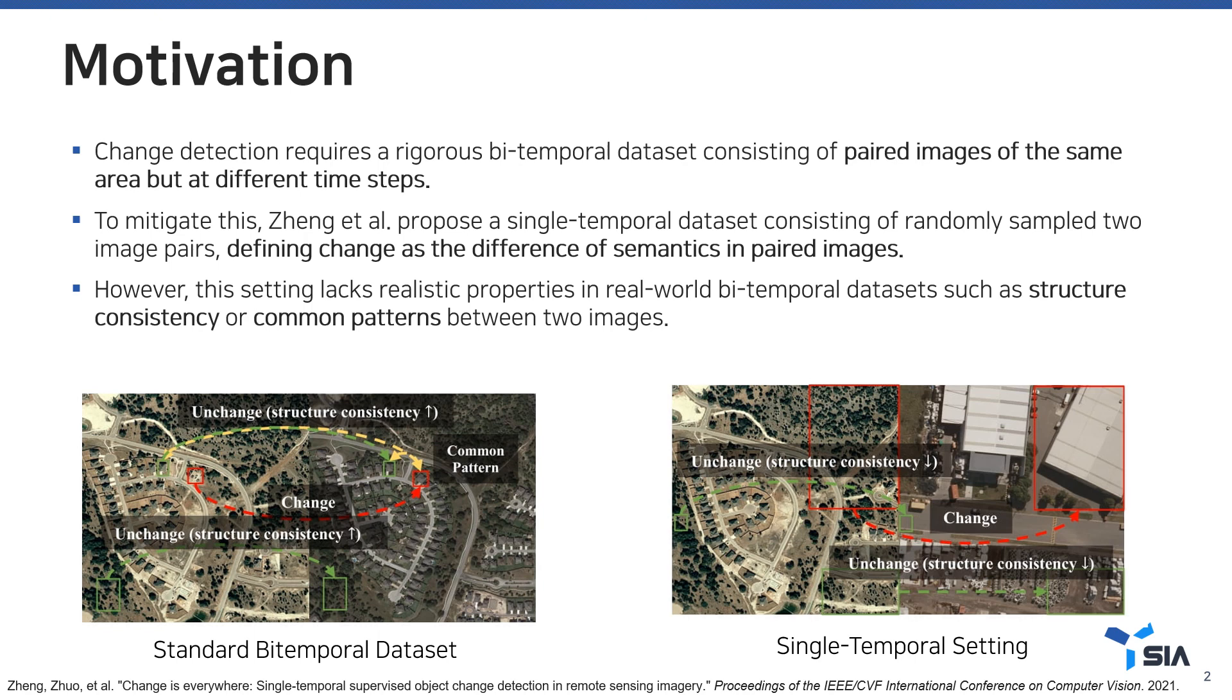To mitigate this, Zheng et al. proposed a single-temporal dataset consisting of randomly sampled image pairs, defining changes as the difference of semantics. This simple method achieves competitive performance without a high-cost bi-temporal dataset.